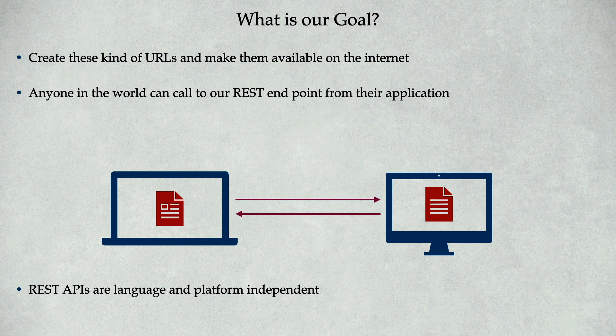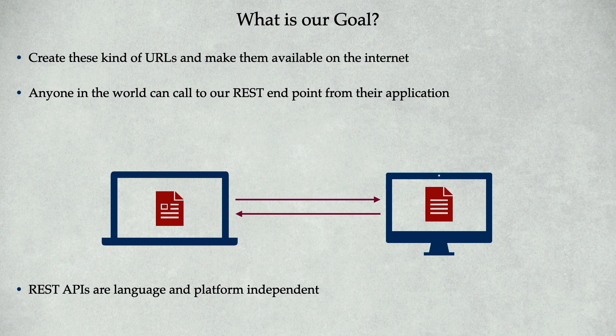So what is our end goal? Our end goal is to create these kinds of URLs and make them available on the internet. At the end of the day, we need to create a REST API — which is nothing but a bunch of URLs — and make them available on the internet. Once these URLs are available, anyone in the world can call our REST endpoints or make a request to them from their application.